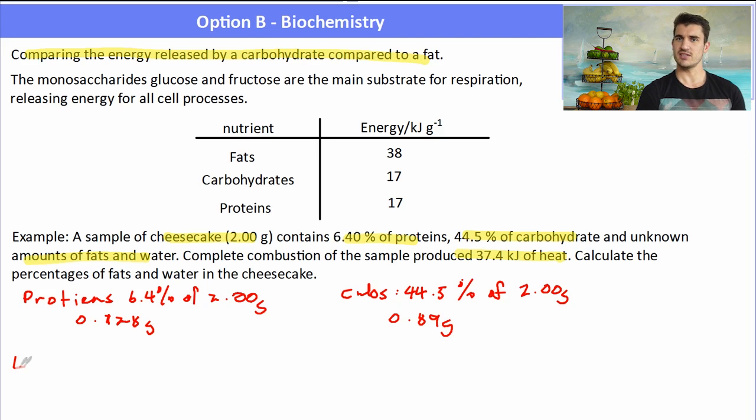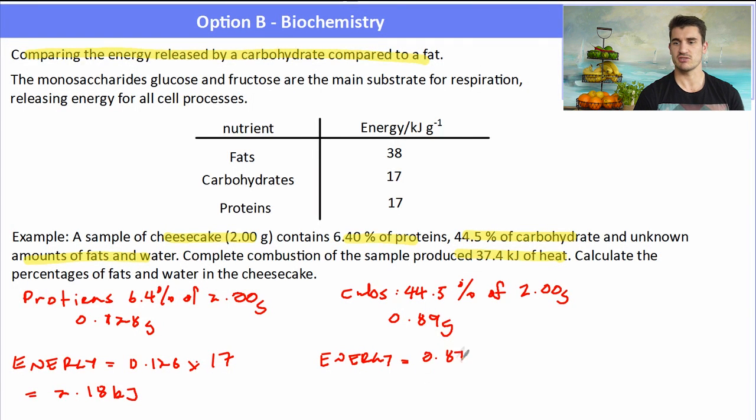Now what we need to do is work out the energy released by both of those by using the nutritional information. So we have 0.126 grams multiplied by 17, and that tells us how much energy is released by the proteins alone. And now we can work out how much energy was released by the carbohydrates alone. So we get the mass and multiply it by the amount of energy released per gram, which is 17 kilojoules per gram, giving us the energy released from the carbohydrates.